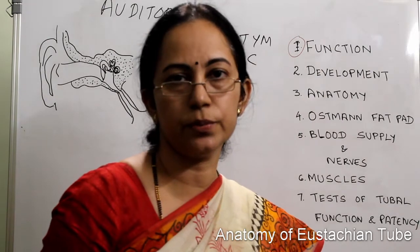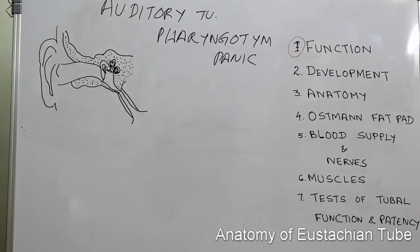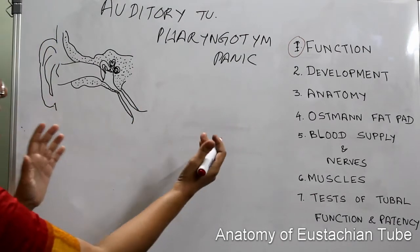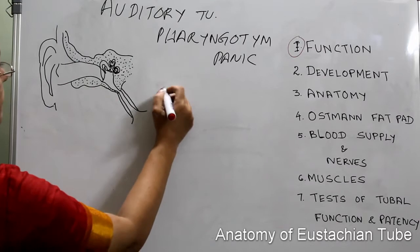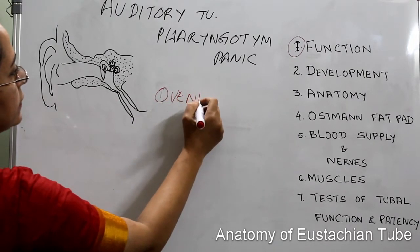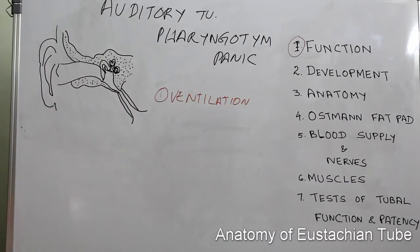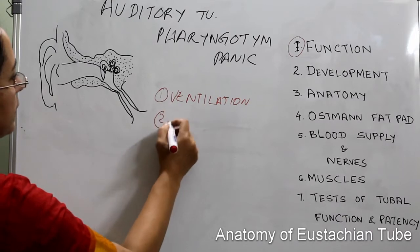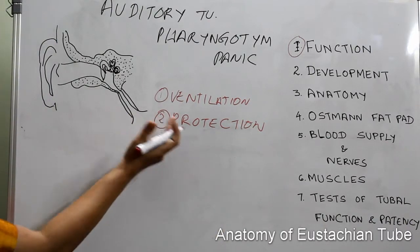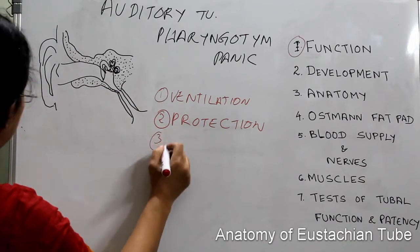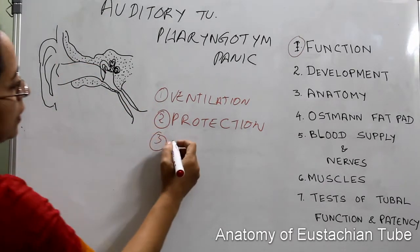There are three functions of the Eustachian tube. The first function, when it opens, is ventilation of the middle ear — air goes from the nasopharynx into the Eustachian tube, ventilating and regulating pressure in the middle ear. The second function is protection of the middle ear from nasopharyngeal secretions and sound pressure. The third function is clearance or drainage of middle ear secretions into the nasopharynx.